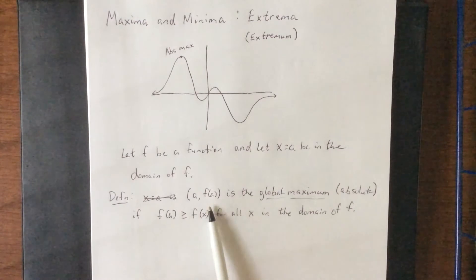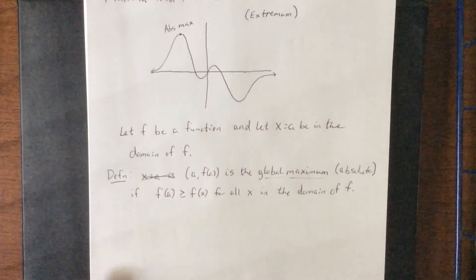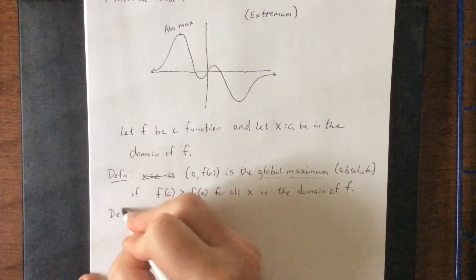Now if we wanted to refer to just the y-value there, we would refer to that as the global maximum value or absolute maximum value. Anytime we throw a value in there, we are talking about specifically a y-value.